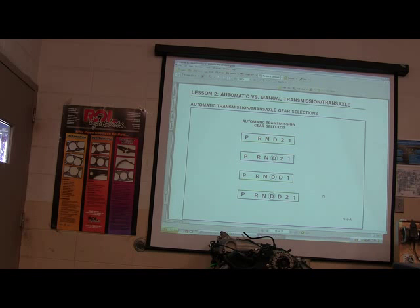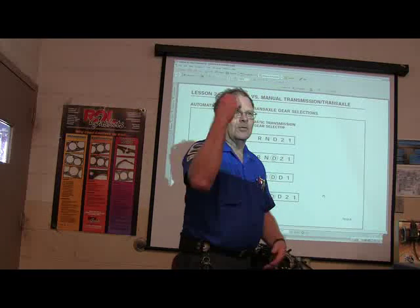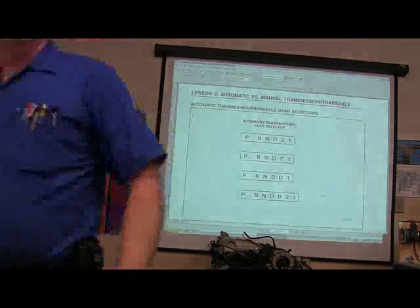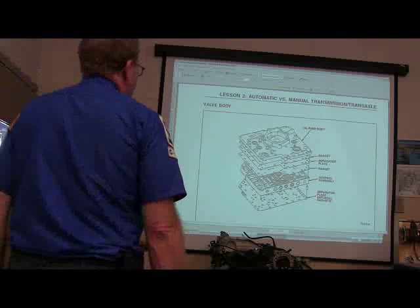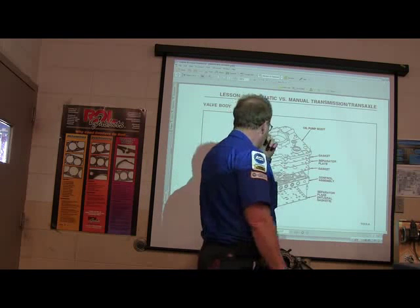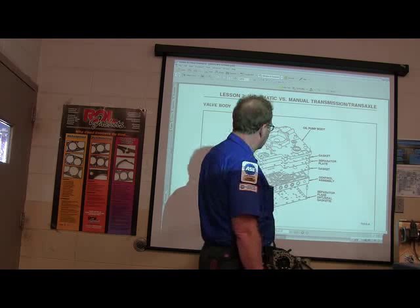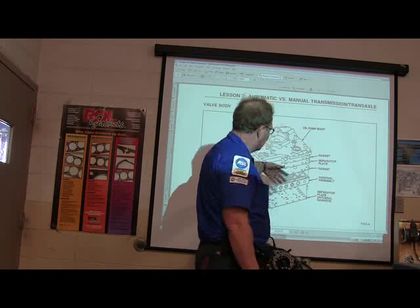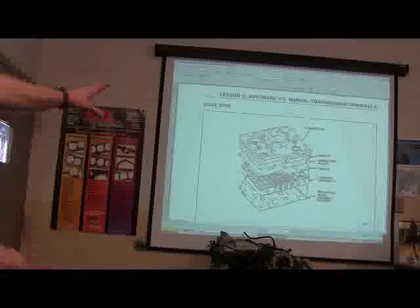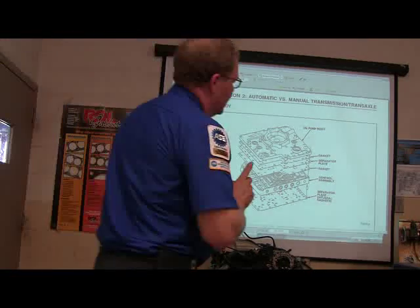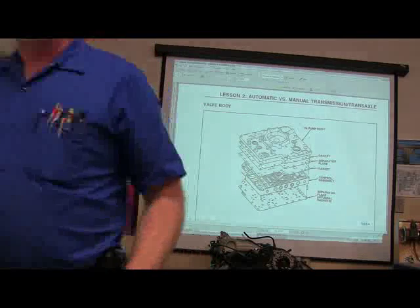Then you've got your PRNDL — P-R-N-D-L — the gear selector. And you've got your valve body here. The valve body looks like a maze, but you don't have to figure all of it out. Basically the valve body directs oil to the clutches and bands, which act and react with different parts of the planetary gear. There are also some one-way clutches in there. Think of it as a wiring schematic for the fluid.